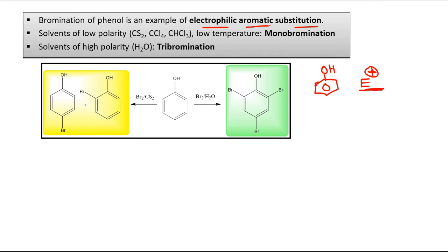The electrophile will search for some electron-dense region. When OH is attached to the benzene ring, it activates the ring by its π-electron effect. So the ring is nucleophilic and the electrophile is E+. Now, if somehow the nucleophilicity on the nucleophile side is increased, the attack by E+ will be highly favored — and that is actually what is occurring here.